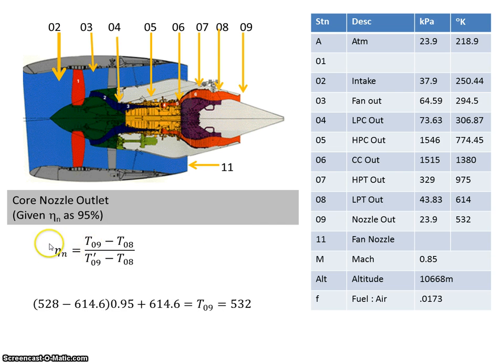We've seen from the efficiency that the ideal value minus the actual value, we can calculate the actual value of T9. So I'm going to use the efficiency here, 95%, multiply that by this value and bring them up. And that gives an add-on, bring the T8 across.